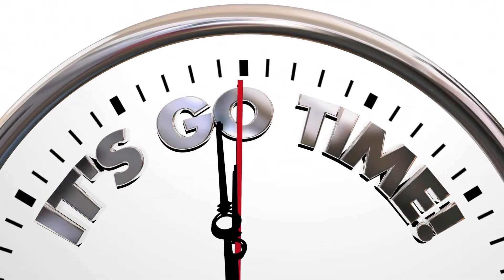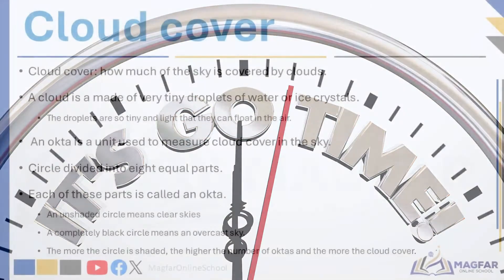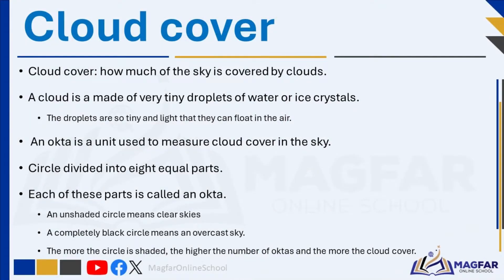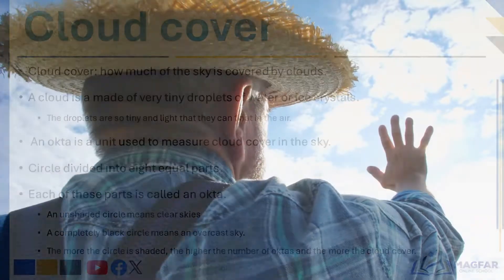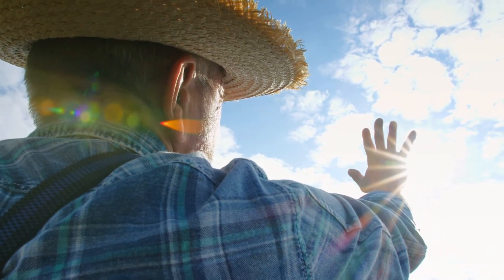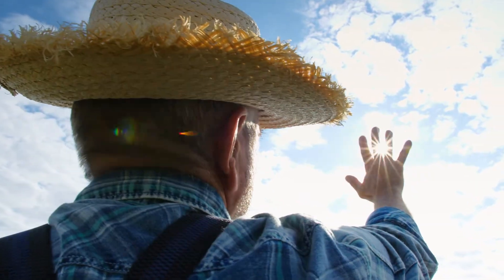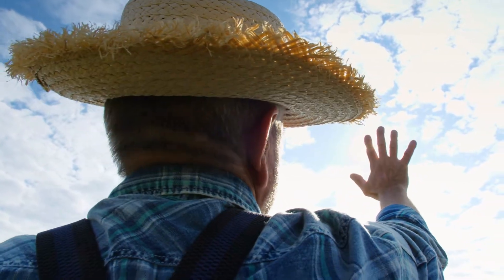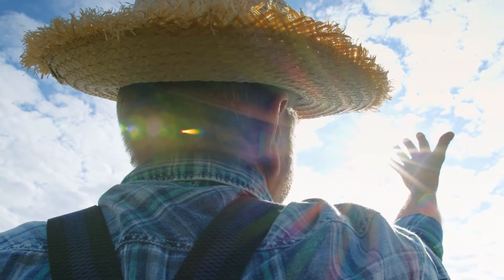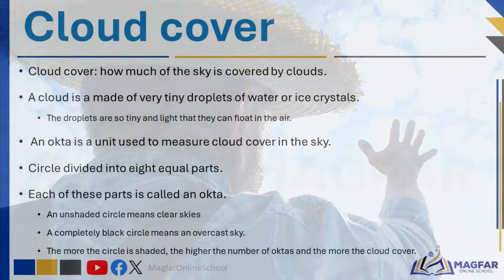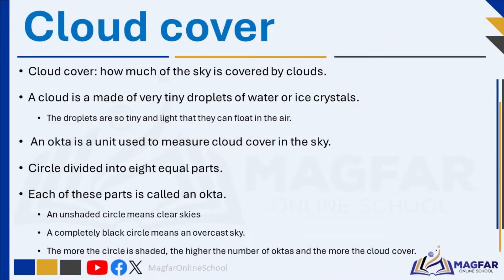So let's get started. Cloud cover refers to how much of the sky is covered by clouds. Meteorologists judge how much of the sky is covered in clouds by looking at the sky. A cloud is a collection of very tiny droplets of water or ice crystals — the droplets are so tiny and light that they can float in the air.